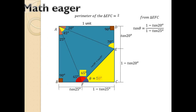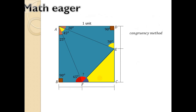The trigonometrical simplification is the most interesting part of this method. Now the next step is to solve this by the congruency method. This is the second method, and it is also called the mirroring method.